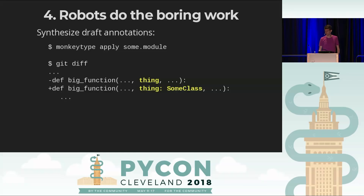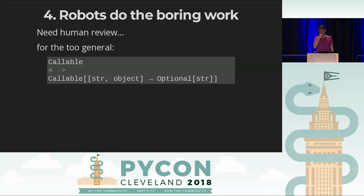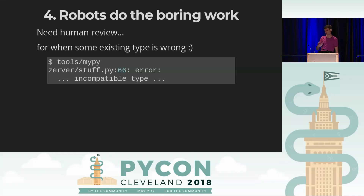These are drafts — don't take the annotations literally. A tool might say it saw eight different types go by so it writes a union, when in fact they're all subtypes of some base class and you should just write that. Or it sees a function type that's hard to sort out at runtime, so you'll need to handle that as a human. Sometimes the draft will reveal a type error in another annotation. You'll need human review, but these tools can get you a large fraction of the way there.